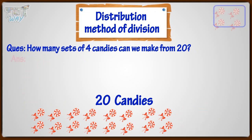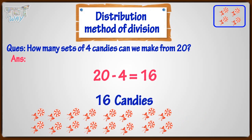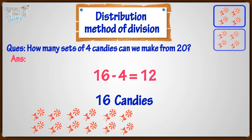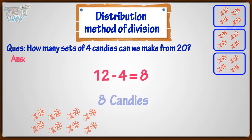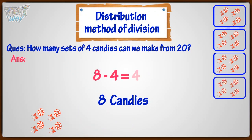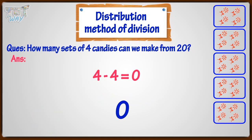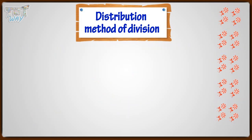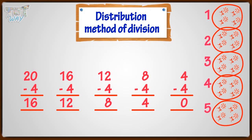Subtract four from 20, we get 16. Again, subtract four, we get 12. Again, subtract four, we get 8. Again, subtract four, we get 4. Once again, subtract four, we get 0. So we can subtract four five times from 20.